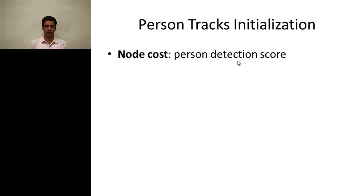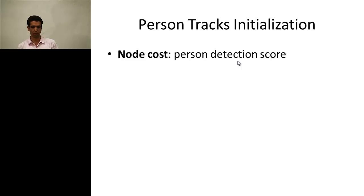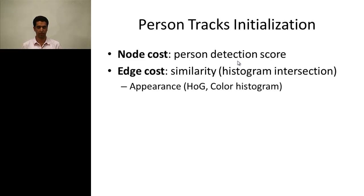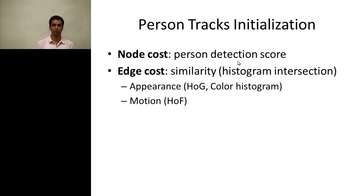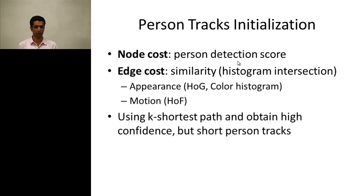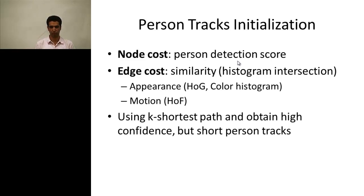For the initialization of person tracks, we use network flow optimization. The node cost is the person detection score, and the edge cost is the similarity of histograms between two person detections. We use appearance based on histogram of gradient and color, and also motion based on histogram of optical flow. We then use k-shortest paths to associate person detections and get person tracklets — short but high-confidence tracklets.